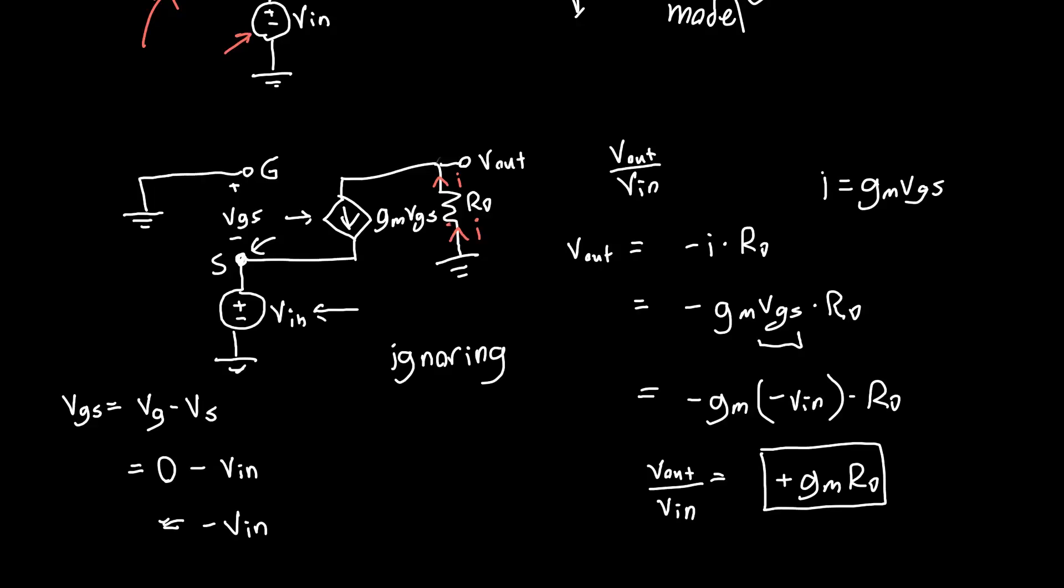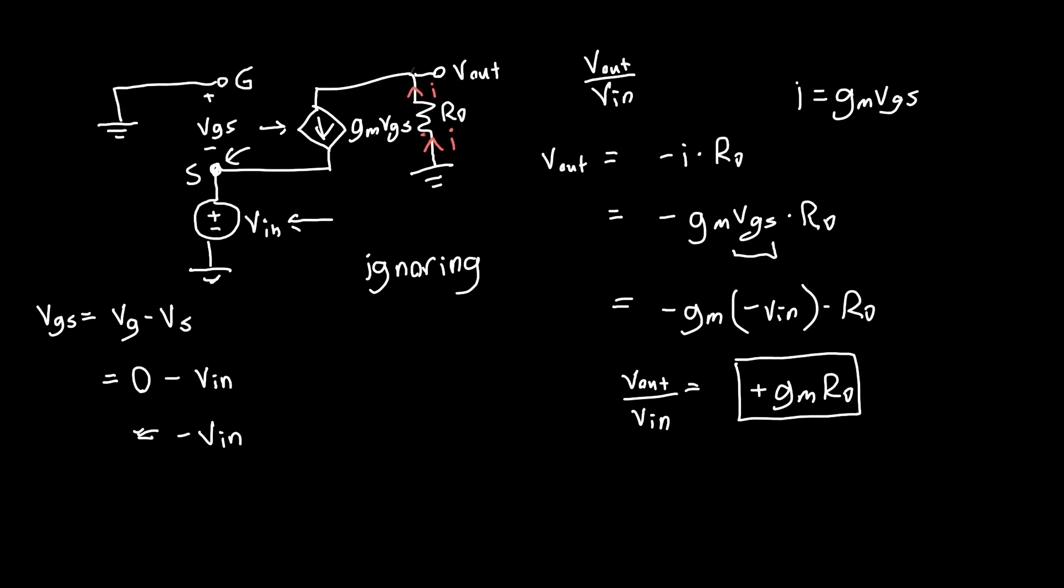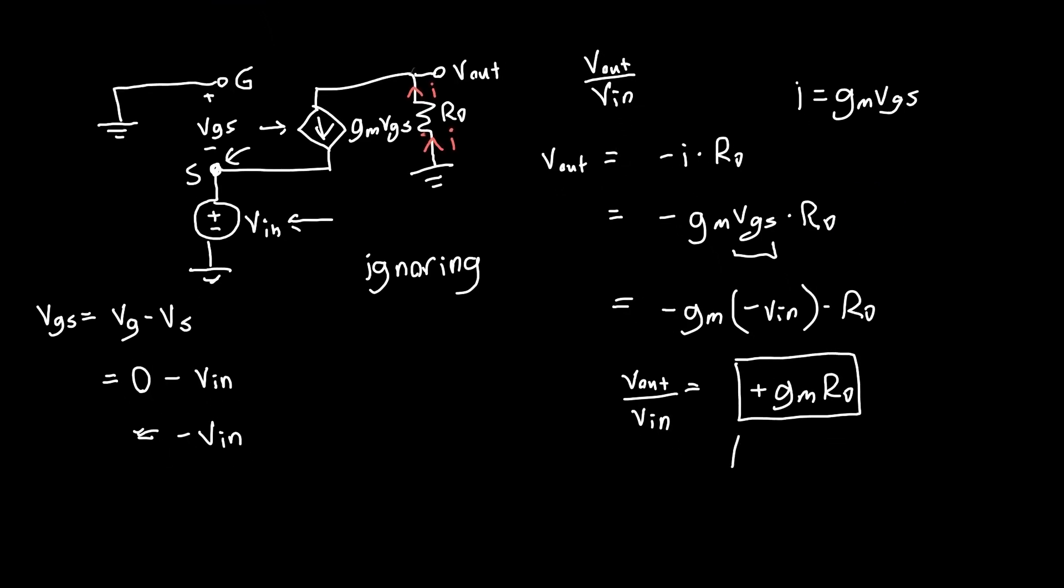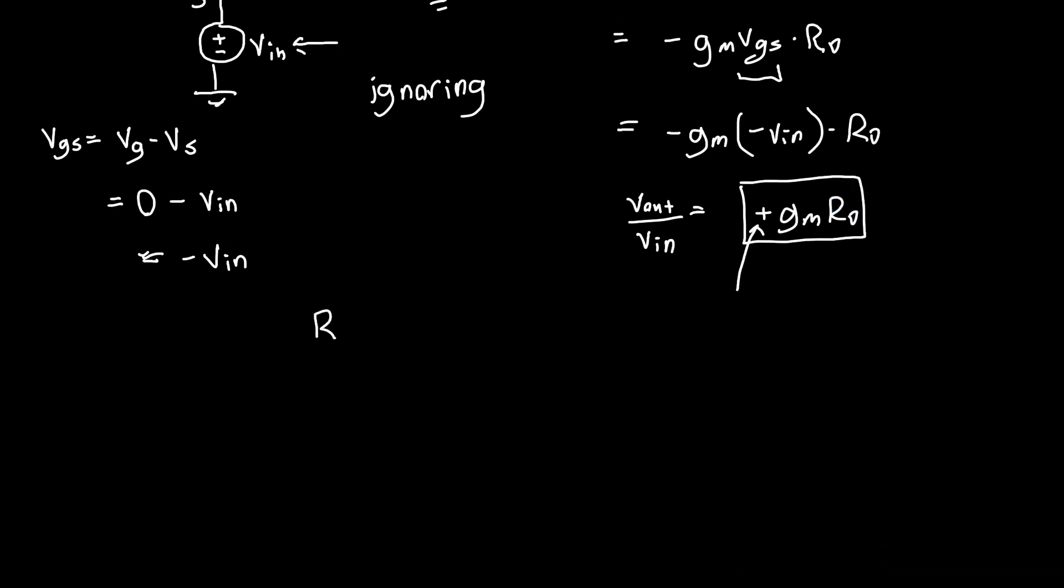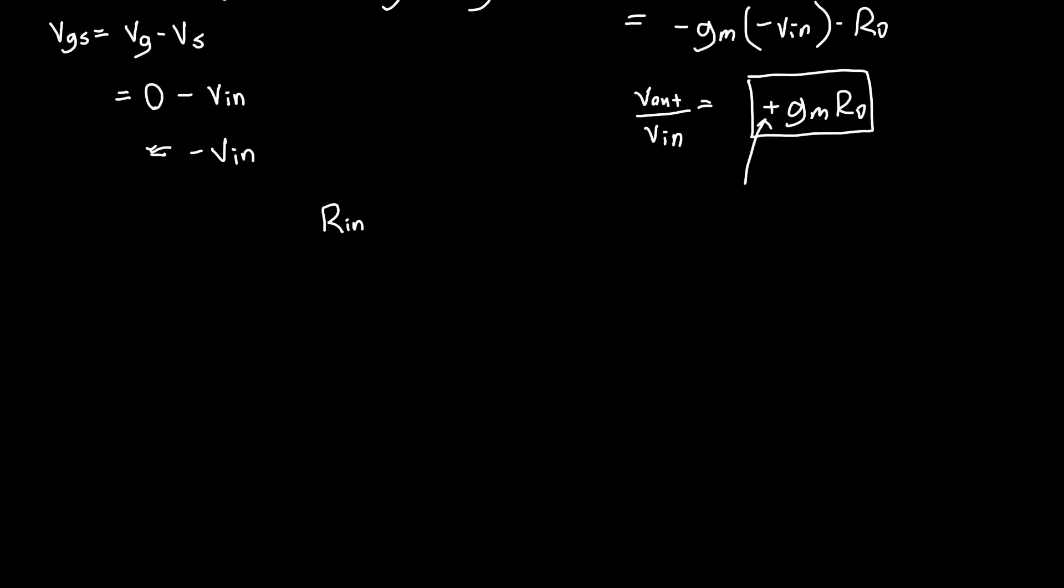That's the answer. If you divide by VIN, the voltage gain Vout over VIN is positive gm*RD. That's interesting because that's almost exactly the same answer we got for the common source amplifier, except now it's positive instead of negative. What's our next quantity of interest? The input resistance.